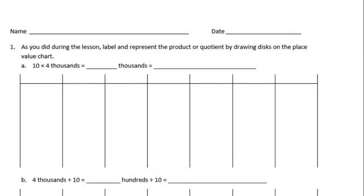Grade 4, Module 1, Lesson 2 Homework. Number 1: as you did during the lesson, label and represent the product or quotient by drawing discs on the place value chart.